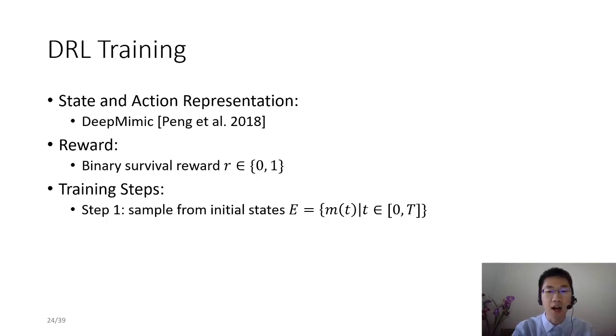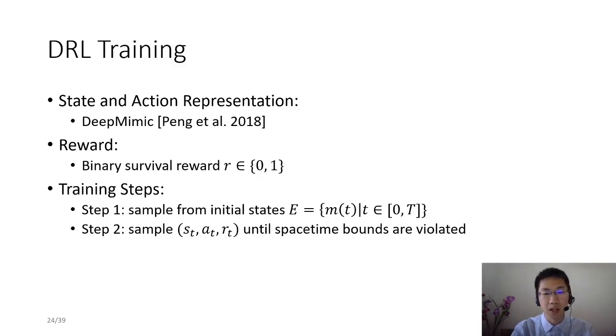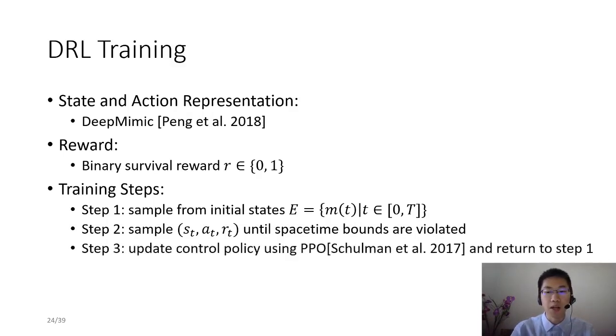Secondly, our framework samples state action reward tuples from interactions between control policy and system until the spacetime bounds are violated. Then we use PPO, an on-policy reinforcement learning algorithm, to update control policy from collected data, and then return to step 1 until learning converges.